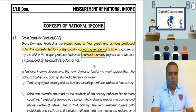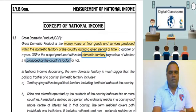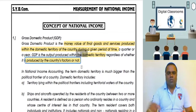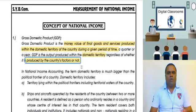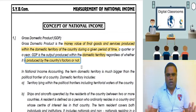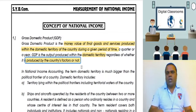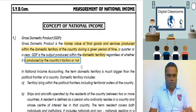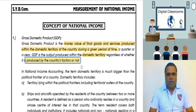It is less important whether the goods and services are produced by the country's own factors or not. In GDP, what matters is the domestic territory — production happening within our country's territory. The word 'domestic' simply means our territory.